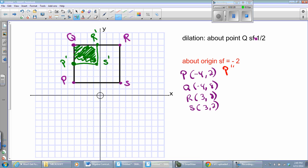I'm just going to multiply by negative two. So, I'll get eight, negative four. Q double prime will become eight, negative 16. Ooh, that's going to go off the graph. That's okay. It's not a big deal. R is going to be at negative six, negative 16. And S double prime is going to be at negative six, negative four.